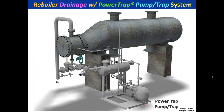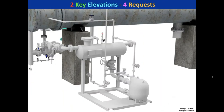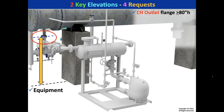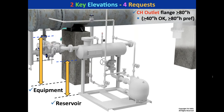Here's the kettle reboiler with a pump trap. The outlet flange on the channel head of the reboiler — shown by the blue line — should ideally be about 80 inches high on new designs. This makes it much easier to install a pump trap system. We can work as low as 40 inches, but that may mean purchasing an additional pump trap for the site for each application. So 80 inches is preferred.